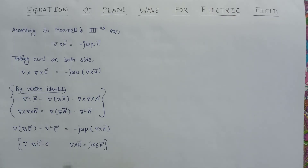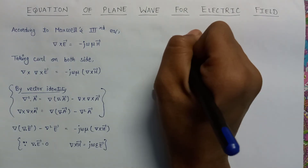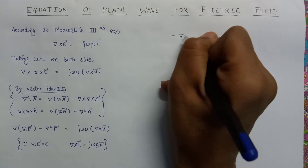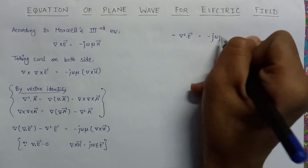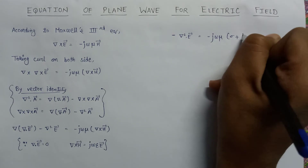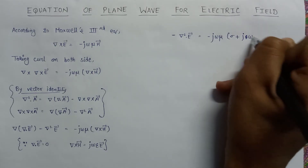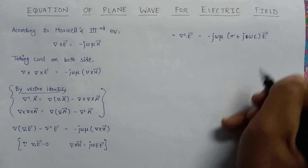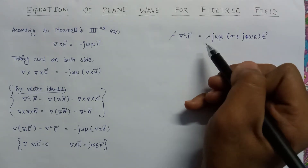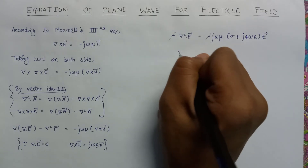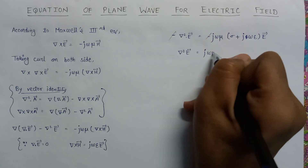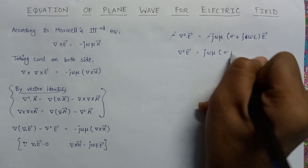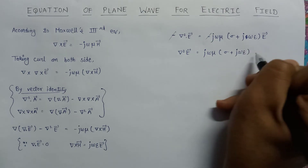So on putting these values into the equation, we get minus del-squared E equals minus j omega mu times (sigma plus j omega epsilon) into E. Therefore, del-squared E equals j omega mu times (sigma plus j omega epsilon) into E.